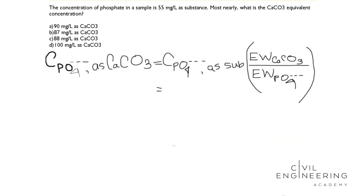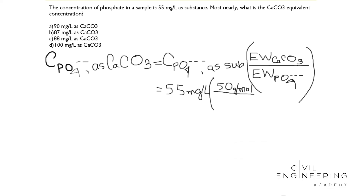First, we are going to use the concentration of phosphate ion — here it is, 55 milligrams per liter. You will find this formula easily in the Lindberg book under the environmental engineering chapter, where you can also find the units. So we know these two values: concentration of phosphate ion is 55 mg/L, and the equivalent weight of calcium carbonate is 50.